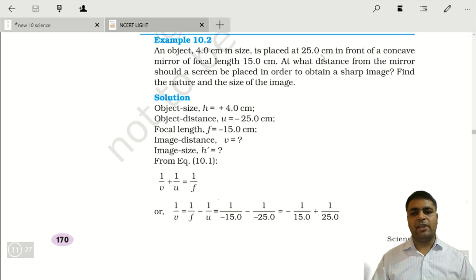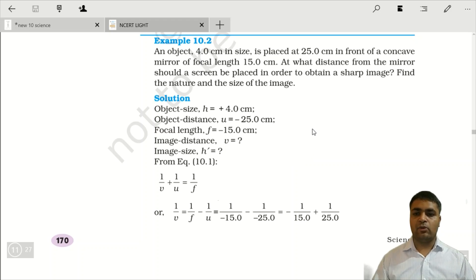Toh humein kya kya pata hai? Ek humein u pata hai, joh negative mein hai, Ek humein f pata hai, Toh isse humein kya nikal lenge? v, the image distance. Dusra, jab humein yeh nikal jayega, toh uske baad humein uska, joh image ka size hai, woh bhi nikal sakte hai, or uska nature bhi bata sakte hai. By putting value that hi/ho is equal to -v/u, yeh wala formula laga kar, humein size of the image bhi bata denge. Toh is wale example ko dekhein, aur iske baad, jitne bhi NCERT exercise ke questions hain, unko solve karne ki koshish karein.